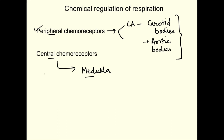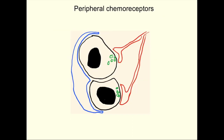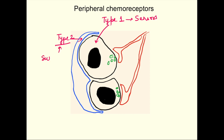The carotid bodies are the main peripheral chemoreceptors. These receptors have two types of cells: type 1 glomus cells, which are the sensors, and type 2 glomus cells, which are the supporting cells. The supporting cells cover the sensor cells, providing structural support to them.